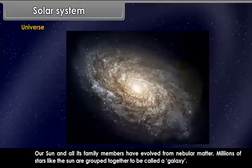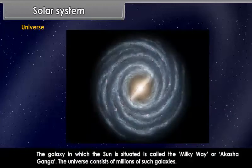Millions of stars like the sun are grouped together to be called a galaxy. The galaxy in which the sun is situated is called the Milky Way or Akash Ganga. The universe consists of millions of such galaxies.